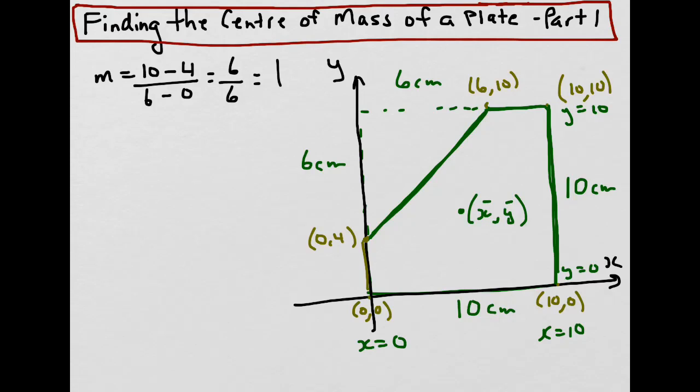Then we use the slope point formula, which is y minus y1 equals m times (x minus x1), to find the equation of the line. We just substitute our values - this is x1, y1 here, and this is our slope, which is 1. So we can say y minus 4 equals 1 times (x minus 0).